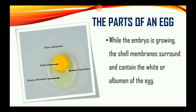While the embryo is growing, the shell membranes surround and contain the whites or albumin of the egg. In this picture, you can see both the thick albumin and also the thin albumin, which simply means that this egg is super fresh. In an egg that is not so fresh, you will only find the thin albumin. So whenever you break the egg and you see the thick albumin, that shows the egg is fresh.